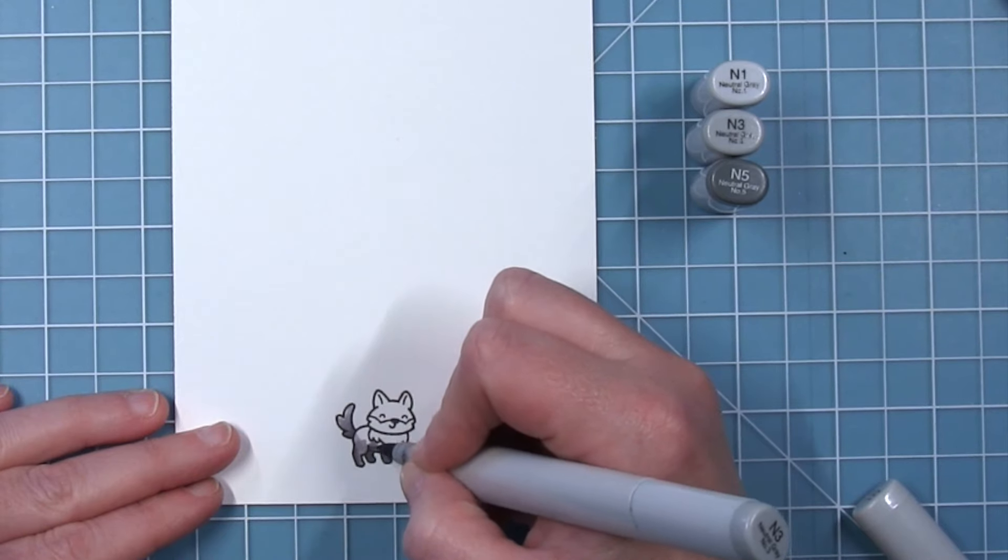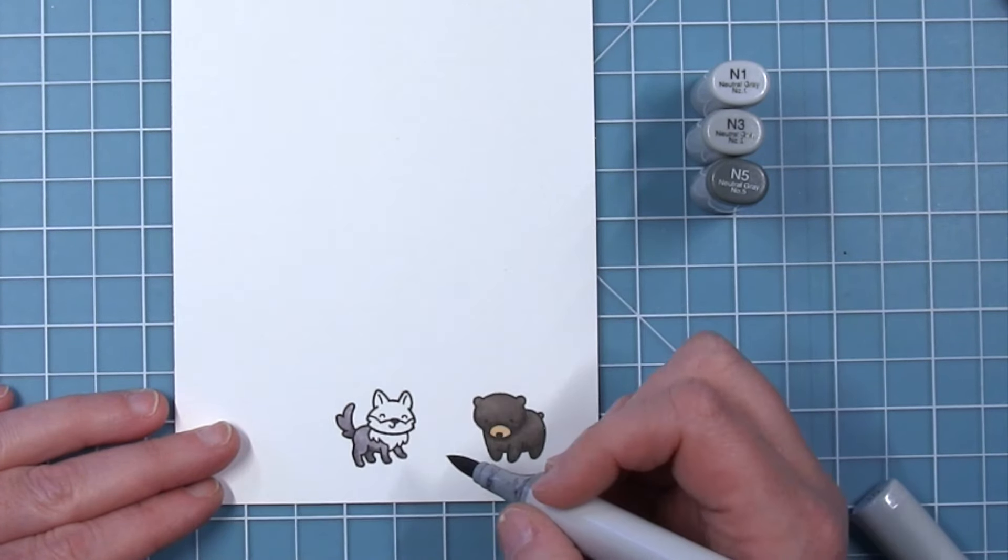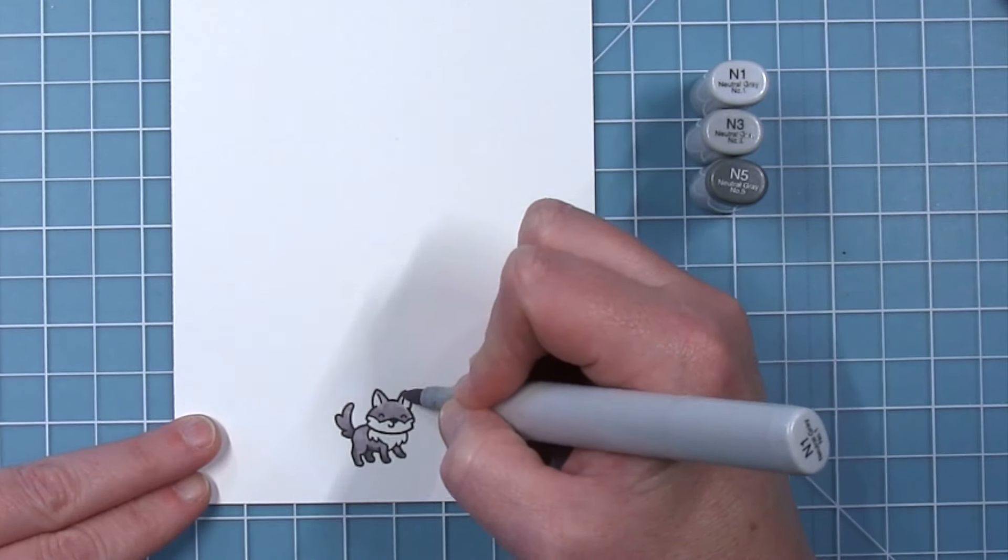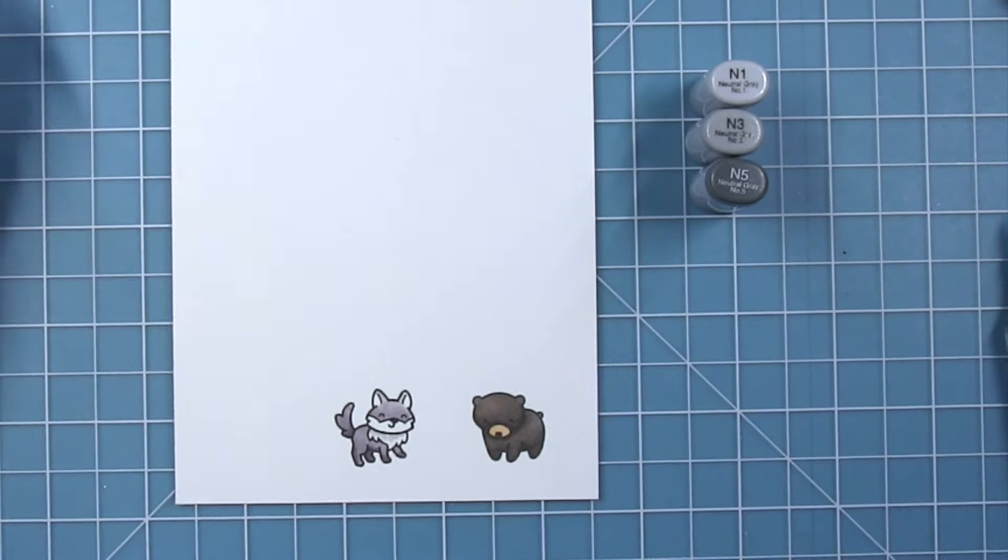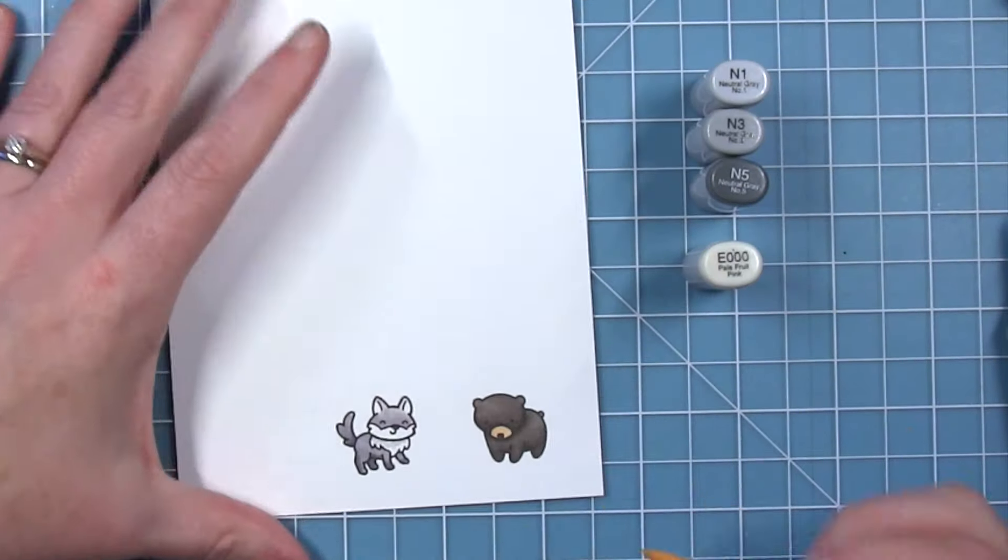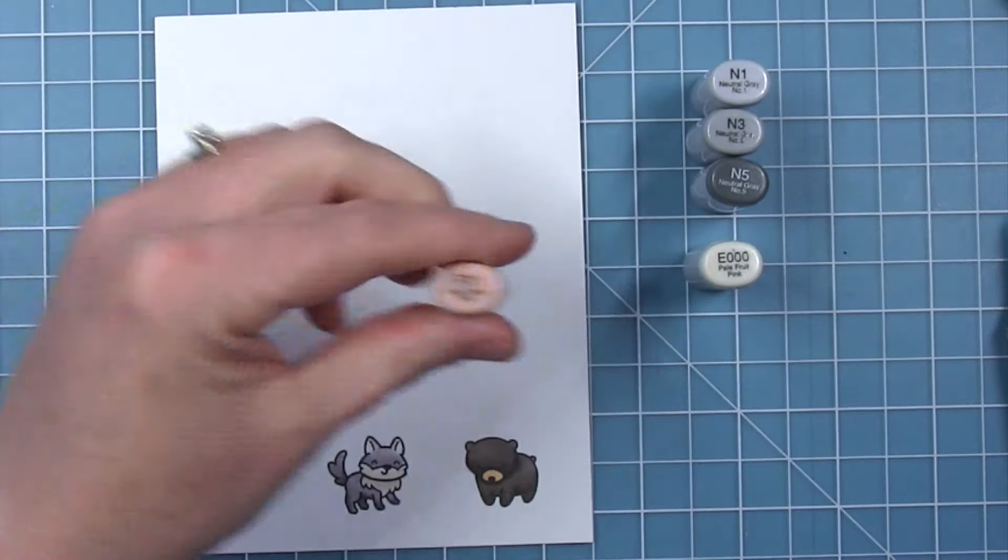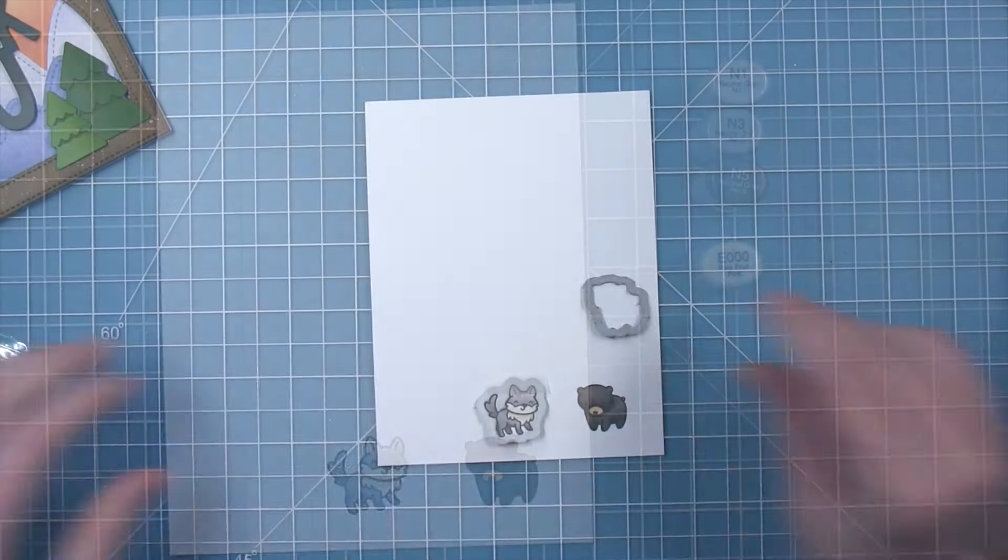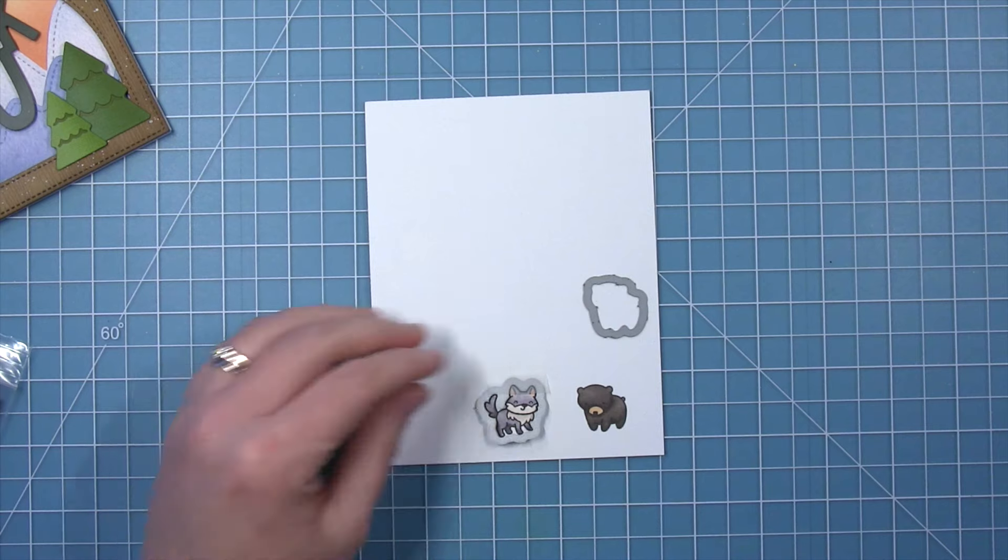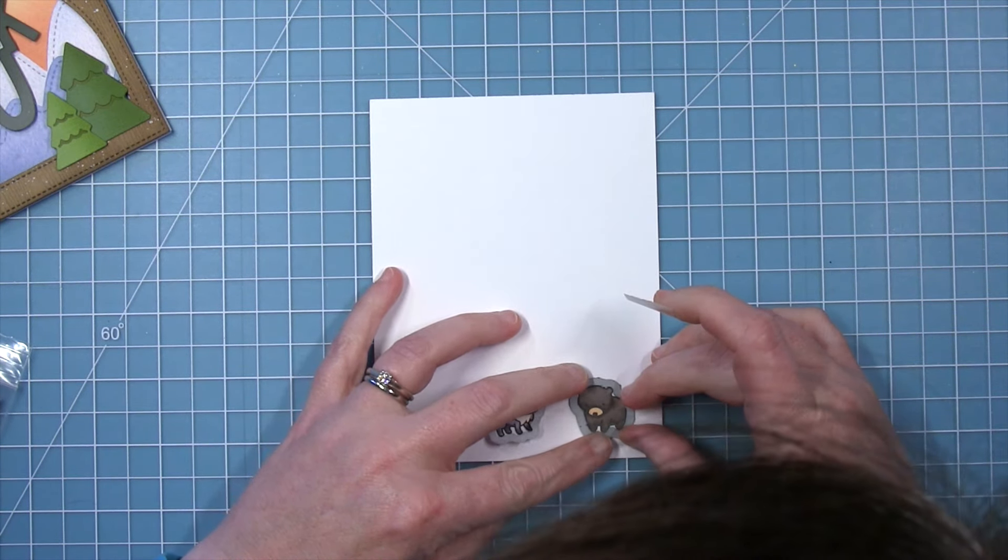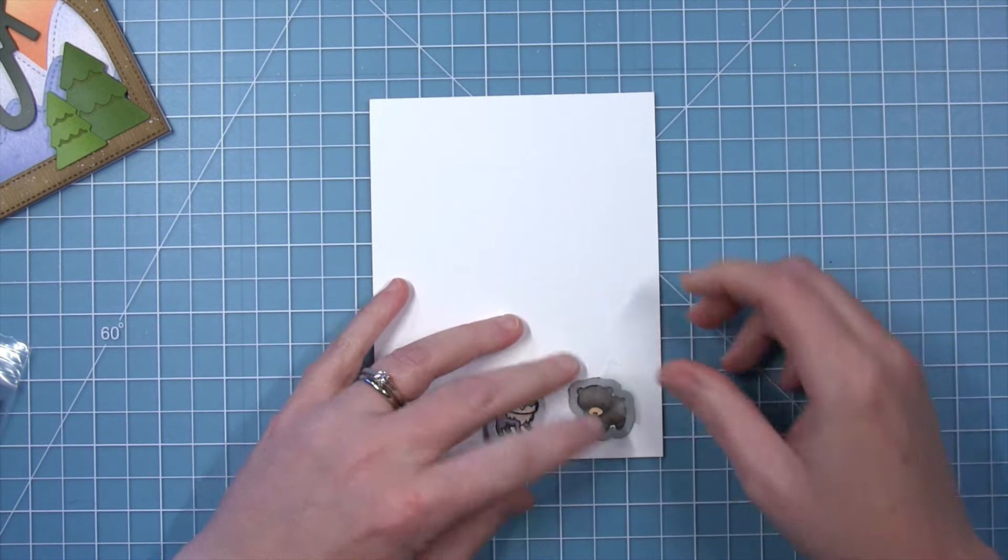For the wolf here, I'm using some neutral grays because I want them to be a different tone of gray, and obviously I'm going to color this one a little bit lighter as well. So I'm using the N5 and 3 for the body, I use the 3 and the 1 for the head, and then I like to add a little bit of gray and then a very pale brown for kind of that chest area and the muzzle of the wolf. And then I'll use the coordinating dies to cut these cute little critters out.